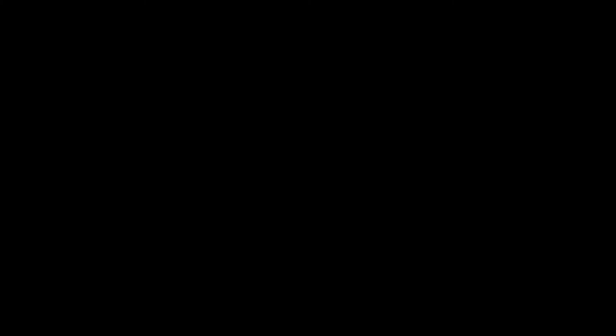Here we see the diffusion process. Step 1: A uniformly doped ingot is sliced into wafers. Step 2: An oxide film is then grown on the wafers. Step 3: The film is patterned and etched with photolithography exposing specific sections of the silicon.